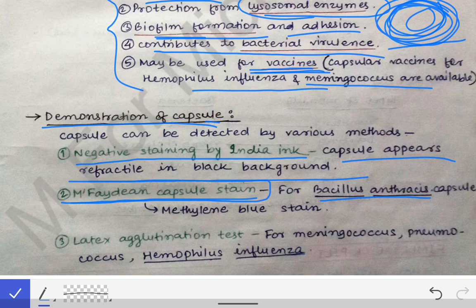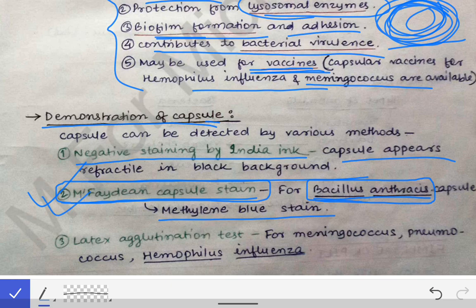We also have the McFadyean capsule stain, which is specifically for Bacillus anthracis. This is important because Bacillus anthracis has a polypeptide capsule, so it requires a unique stain. The McFadyean capsule stain is essentially a methylene blue stain — remember this for the staining of Bacillus anthracis.